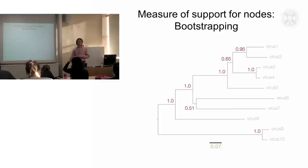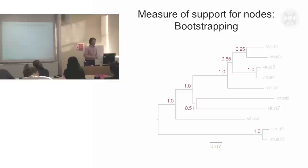So, essentially, if you see a bootstrap value of one, that's a very high level of statistical support for the positioning of that node and the branch pattern in the tree.